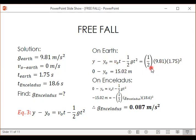So we'll have one half times 9.81 times 1.75 squared. This is positive. Okay. So our initial height will be 15.02 meters.